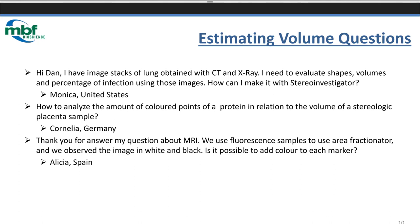Monica from the U.S. has image stacks of lung obtained with tomography and X-ray and needs to evaluate shapes, volumes, and percentage of infection. To estimate volume we can use point counting. Monica introduces something different: percentage of infection. The answer is to use another point counting probe called area fraction fractionator. That will give you an estimate of the percent by volume. Cornelia asks how to analyze the amount of color points of a protein in relation to the volume of the placenta — we can use area fraction fractionator to get an estimate of the percent by volume.